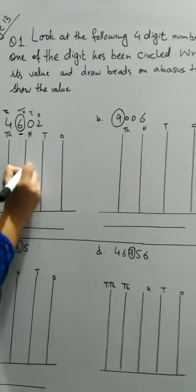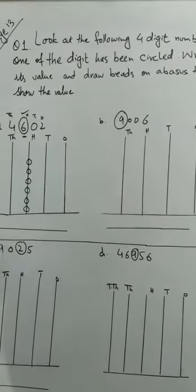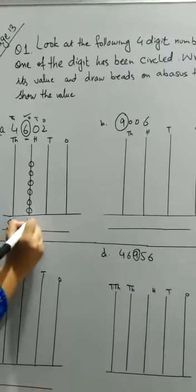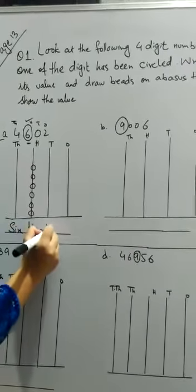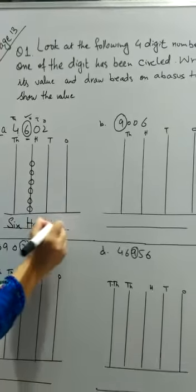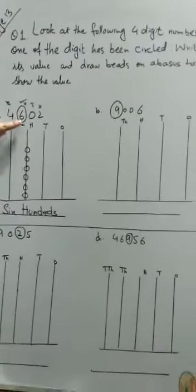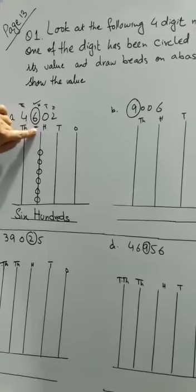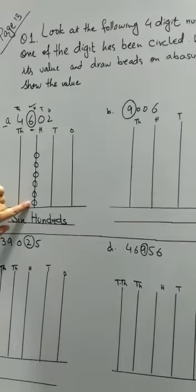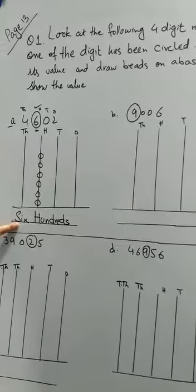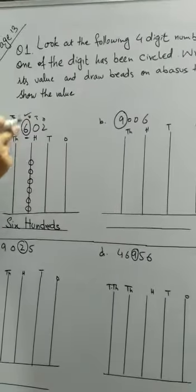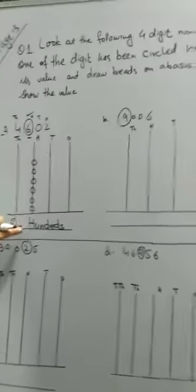You will draw six beads in the hundreds place. One, two, three, four, five, and six. Write six hundred. The value of the circled digit six is six hundred.